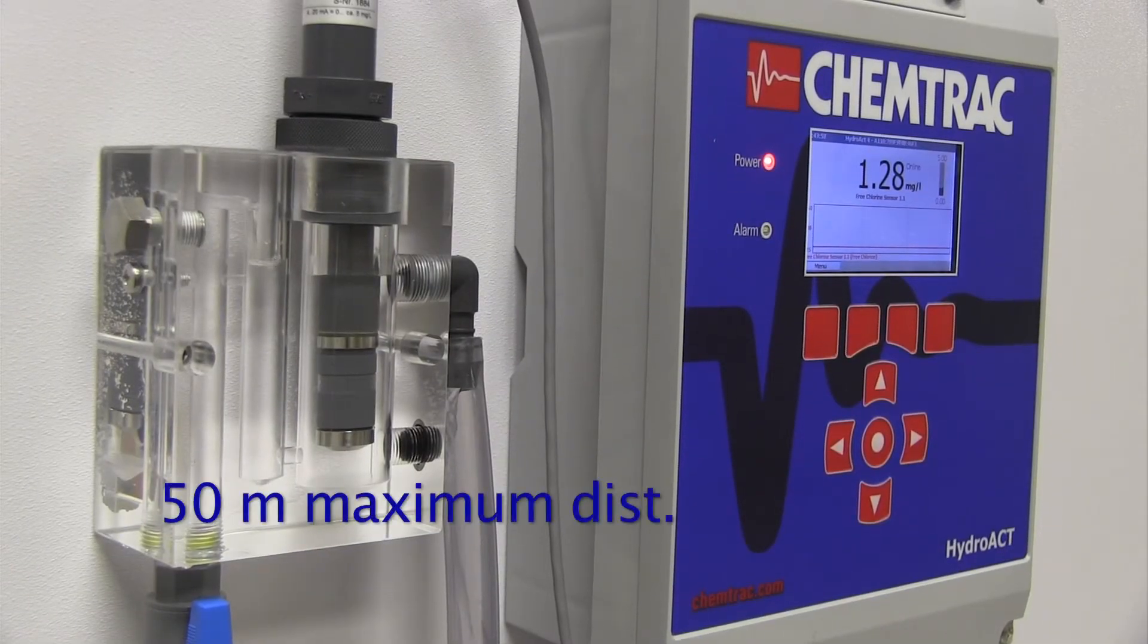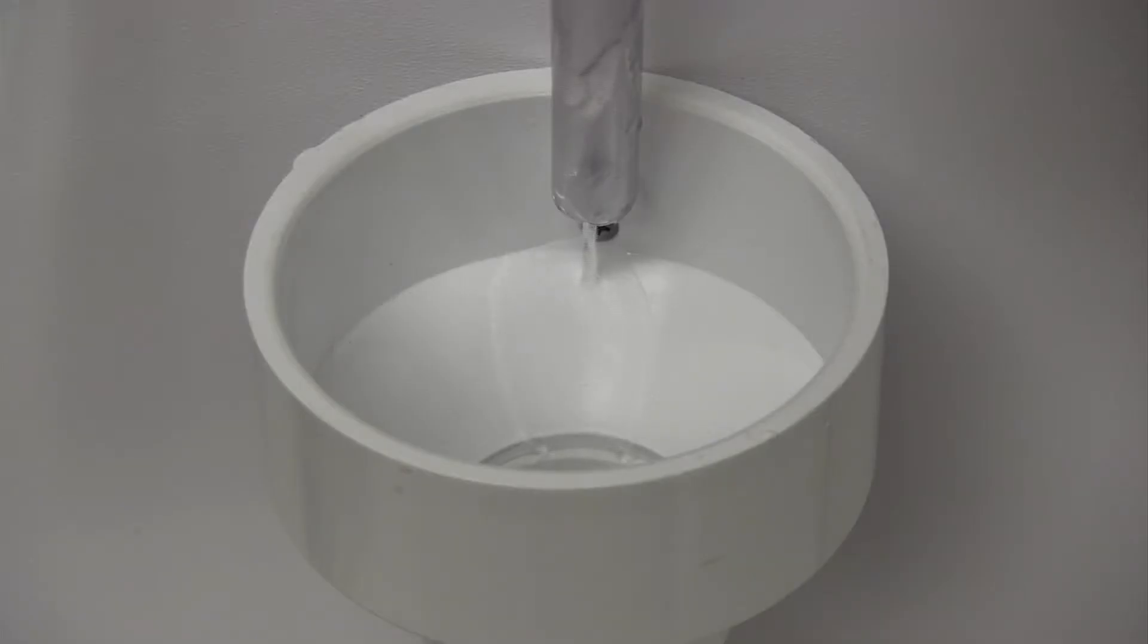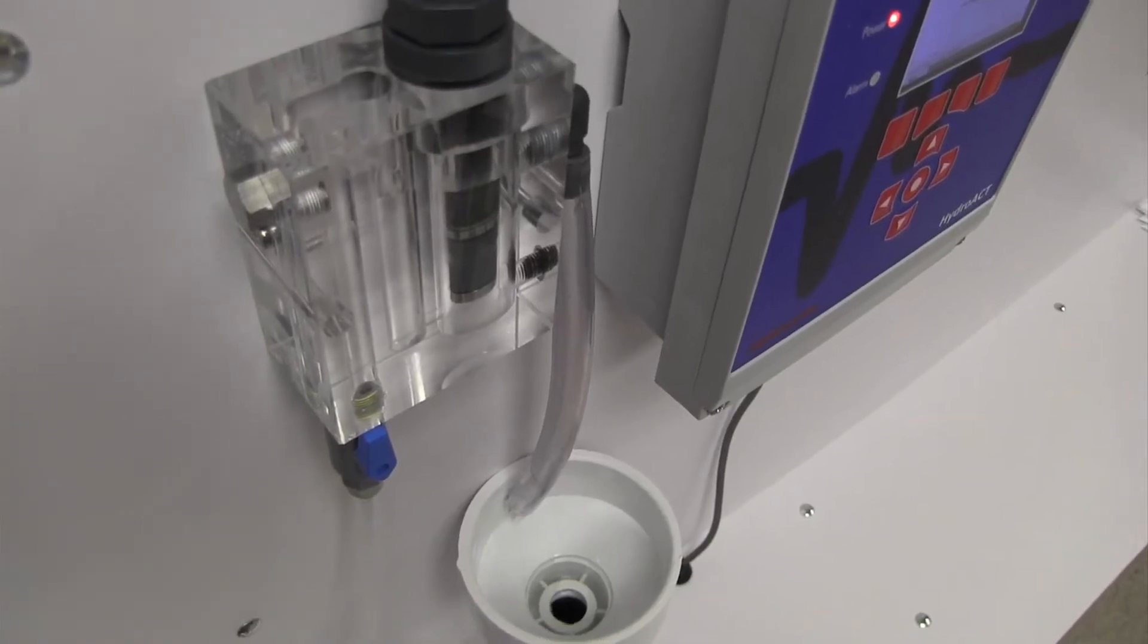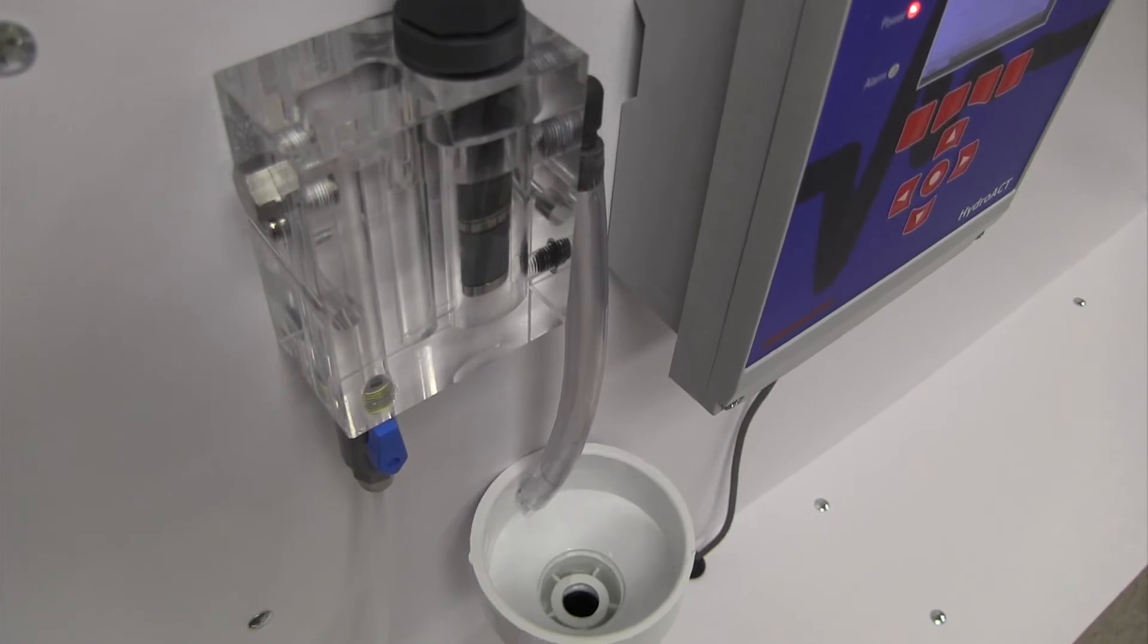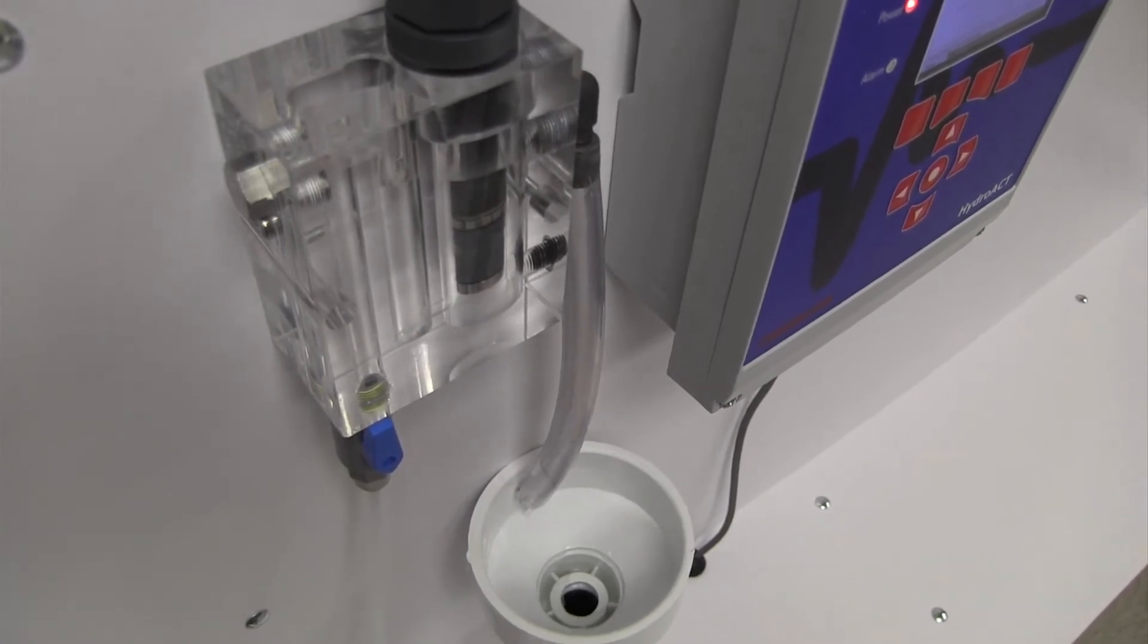As a general rule, the flow cell should be positioned no more than 50 meters from the Hydroact analyzer. The sample outlet should flow directly into an atmospheric drain. The flow cell is vented and will not achieve the proper flow rate if there is any back pressure or flow restriction caused by the drain line.